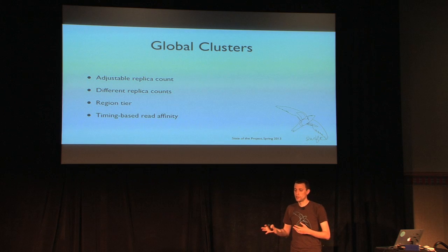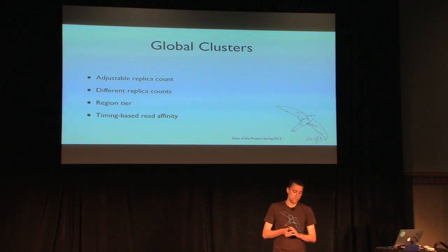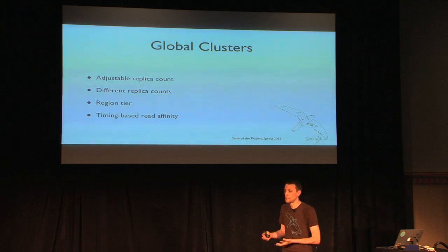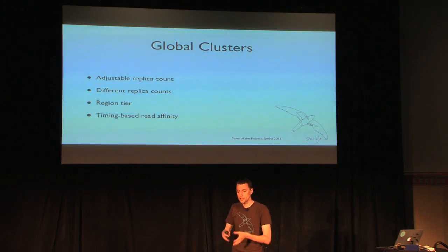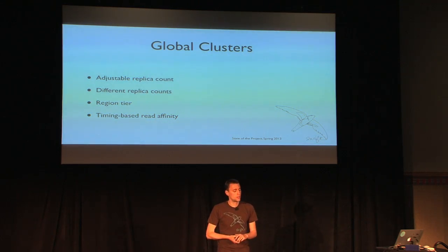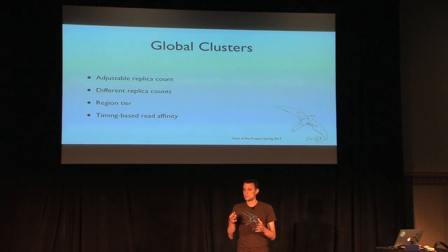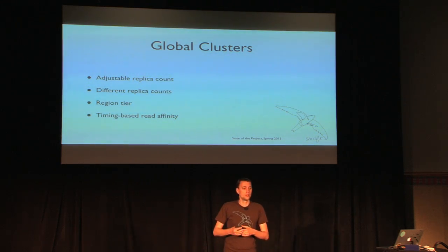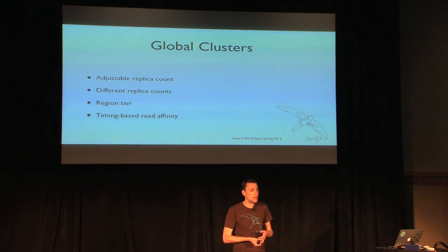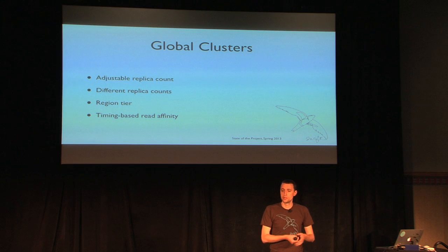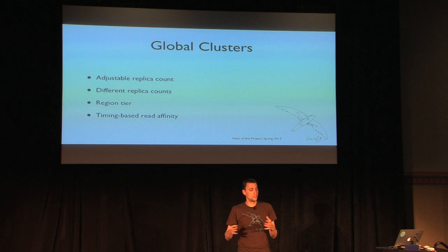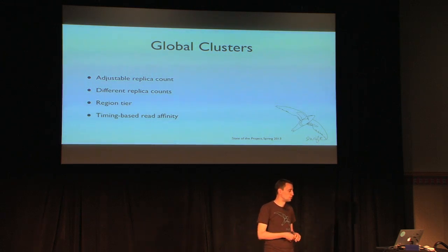Another important building block is the ability to have different replica counts for your account, your container, and your object replica counts. Previously the code assumed they were all the same — generally three. That limitation is no longer in Swift, and it allows you to have a more flexible deployment pattern.